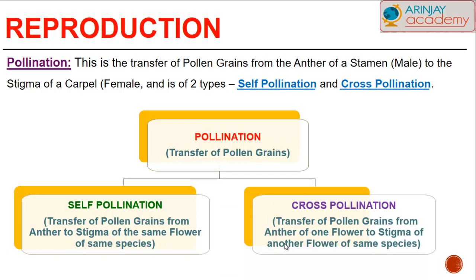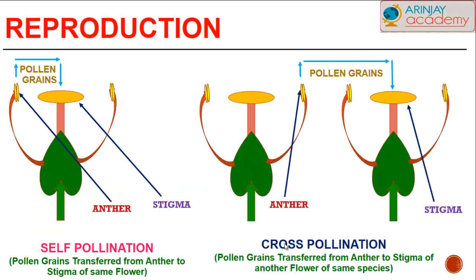In cross-pollination, the transfer of pollen grains takes place from the anther of one individual flower to the stigma of another individual flower, but of the same species. Looking at the diagram showing self and cross-pollination: in self-pollination the pollen grains are transferred from the anther to the stigma of the same flower, whereas in cross-pollination it is transferred from one flower to the next, but the flowers are of the same species.